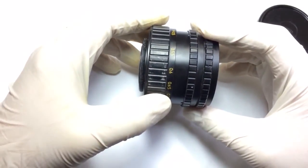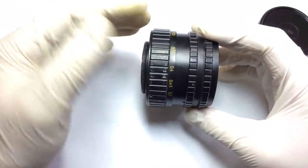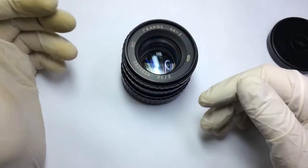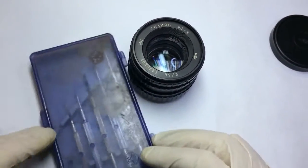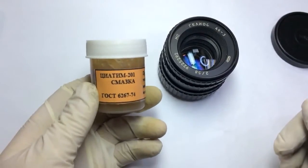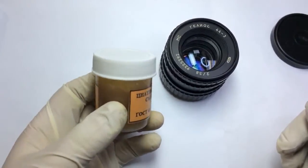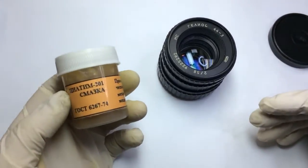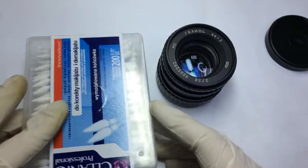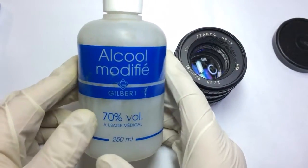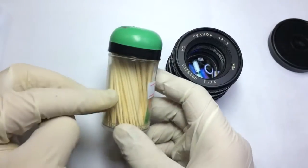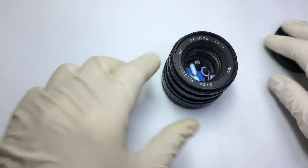To do all this manipulation we need the following things: a set of micro screwdrivers, then lubricant. I use the TsIATIM-201 lubricant, specially developed in the Soviet Union for this purpose, and cotton sticks to eliminate all grease, 96% alcohol, and also toothpicks. So let's start.